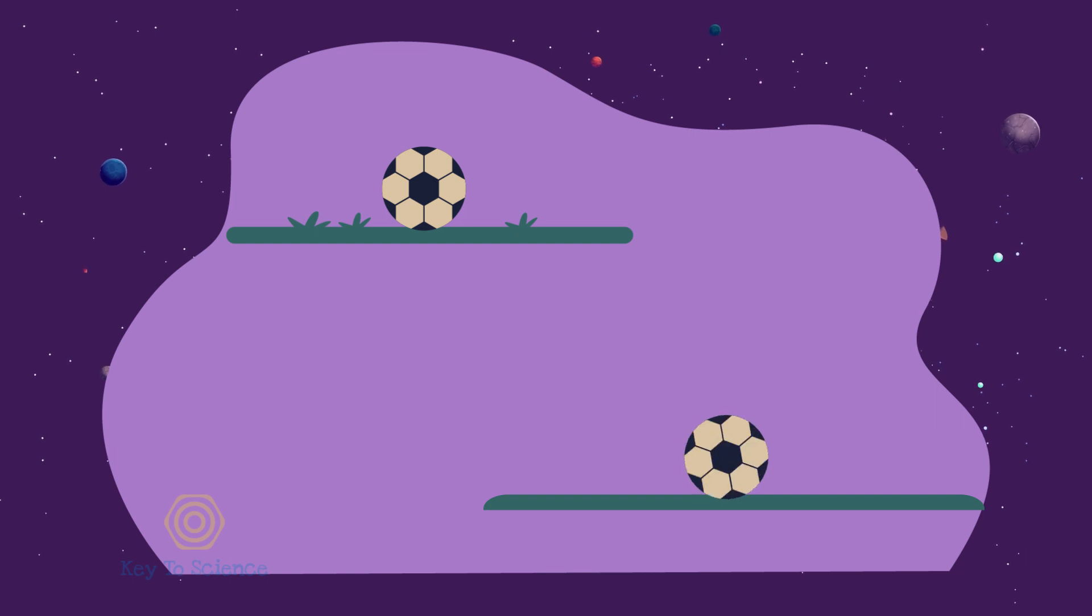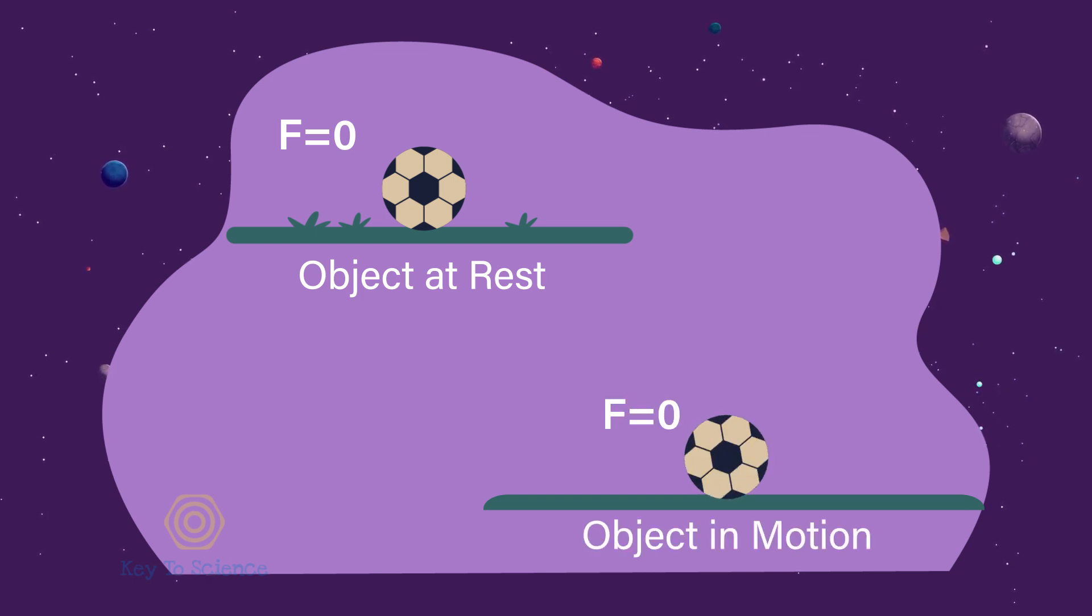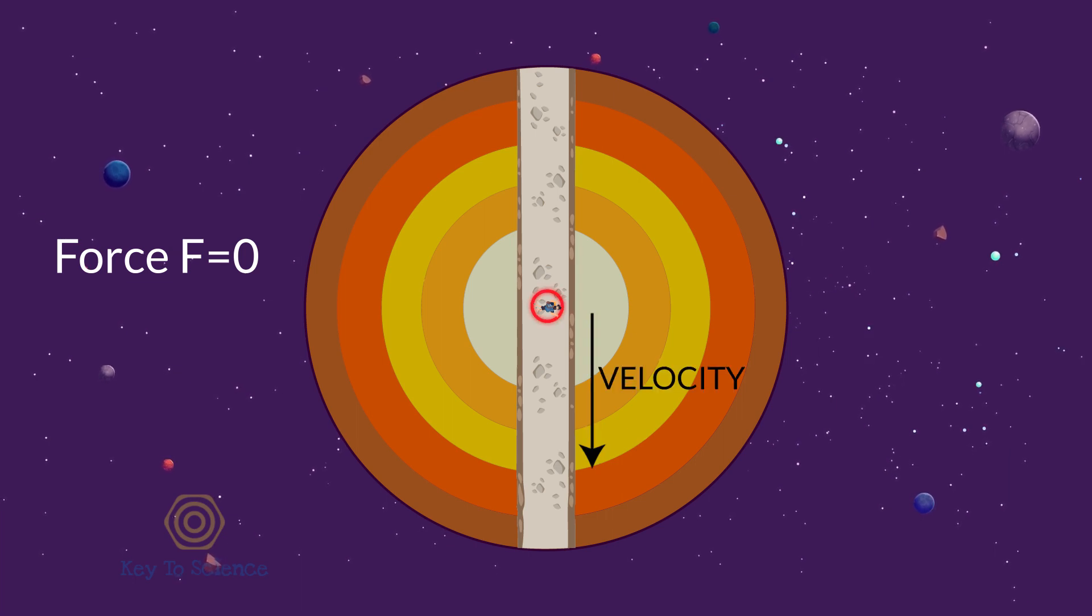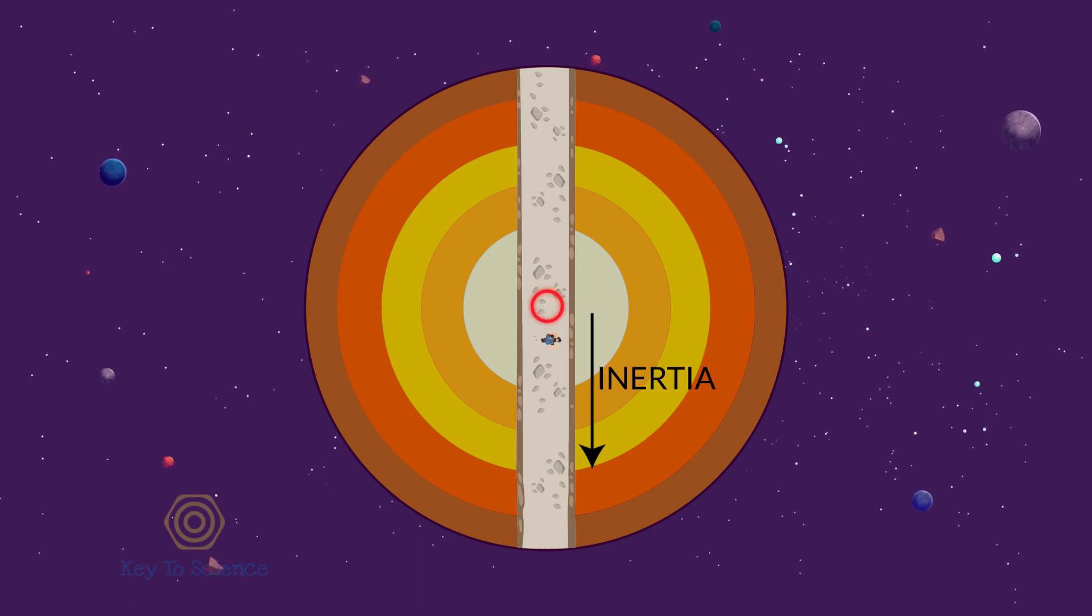From Newton's theories, we know that if there is no force acting on an object, the object at rest will remain at rest, and an object in motion will be moving with the same motion. Therefore, at the center, as there is no force acting on us, we'll keep moving with the velocity we have gained up to this point. We'll pass through the center of the Earth due to the inertia.